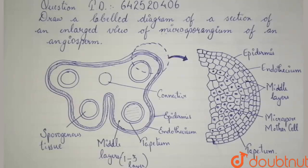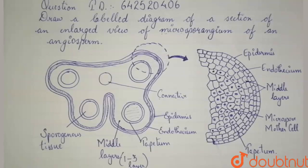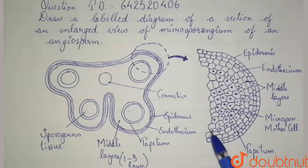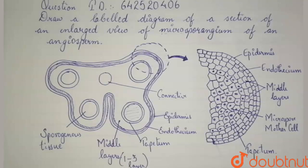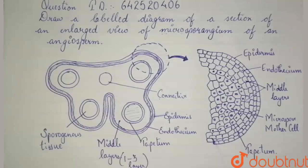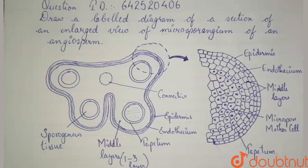Then comes the tapetum. The tapetum is the innermost layer, which nourishes the developing pollen grain. The cells of the tapetum possess dense cytoplasm and generally have more than one nucleus. The tapetum cells can become binucleate or multinucleate by undergoing endomitosis. In endomitosis, the nucleus divides within the nuclear membrane, but cytokinesis does not take place.